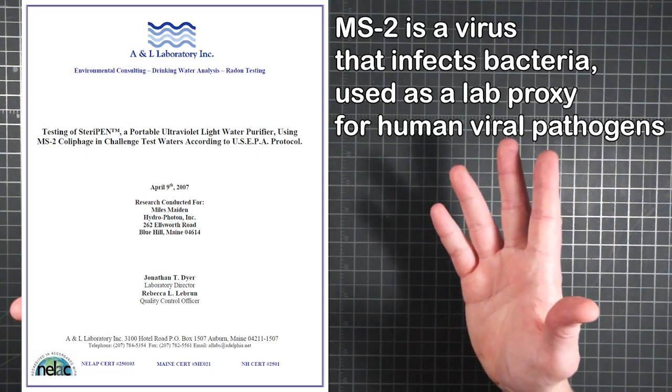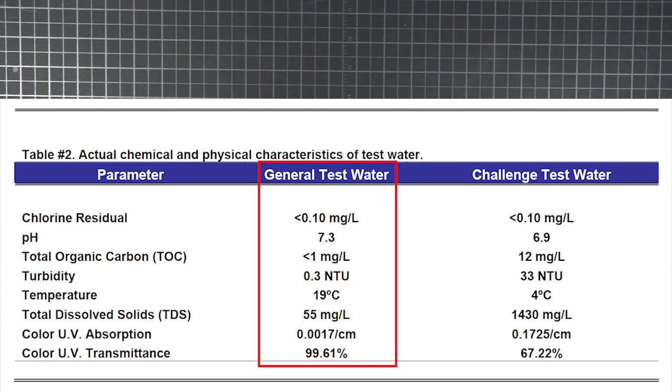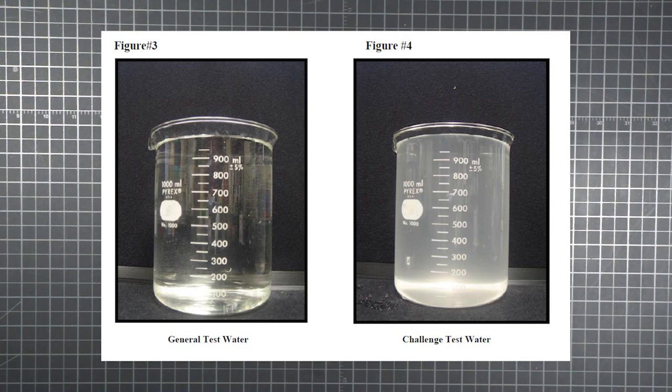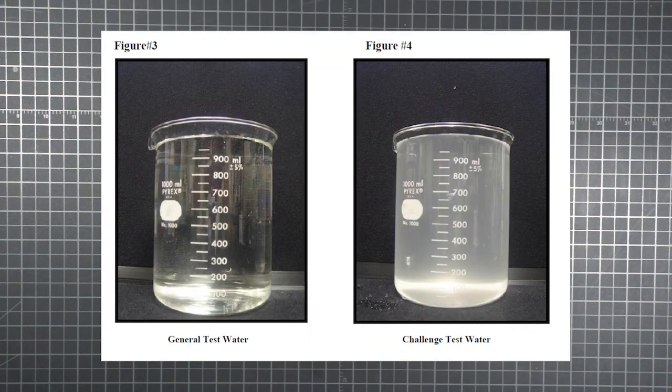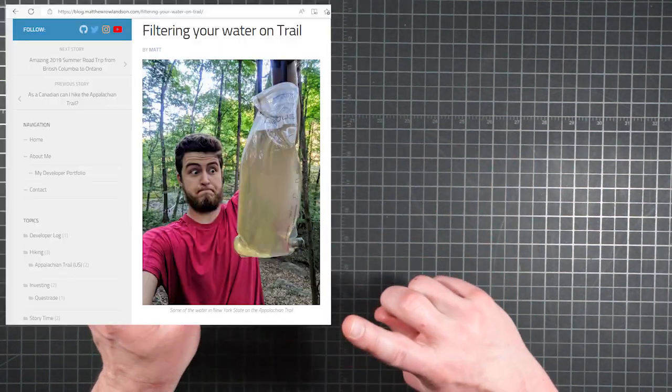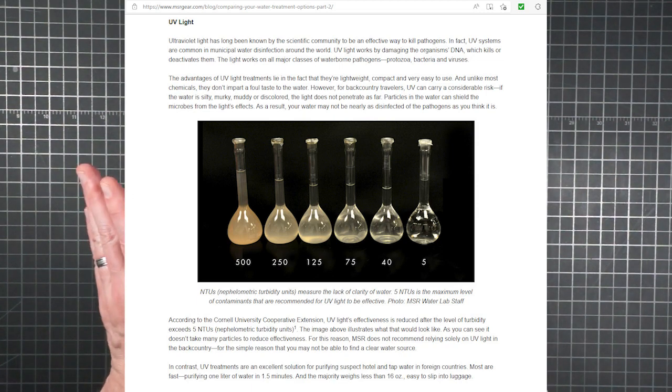MS2 is a virus that infects E. coli bacteria, and it's commonly used as a proxy in tests for human viral pathogens. Per protocol, the tests are run with both a general test water and a challenge water. Note that turbidity of the challenge water is given as 33 NTUs, compared to only 0.3 for the general sample. So here's what those samples looked like side by side. The SteriPen was then inserted, and the samples were illuminated while being stirred per the manufacturer's instructions. Average reduction across 3 trials for the general test water was almost 3.5 logs. And for the challenge water, the turbidity and dissolved solids dropped that to below 3.